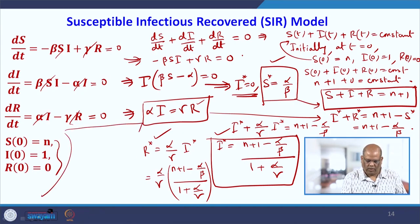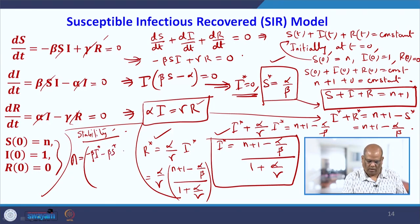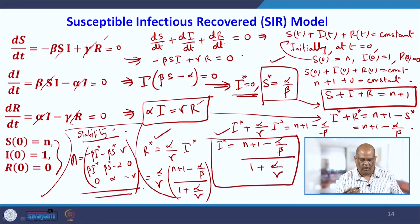For stability analysis, we find the Jacobian matrix A by differentiating with respect to S, I, and R. The matrix is: [−β·I*, β·S*, γ; β·I*, β·S*−α, 0; 0, α, −γ]. The stability analysis is left as an exercise — find the eigenvalues, form the characteristic equation, and apply the Routh-Hurwitz criteria to find the condition for stability.